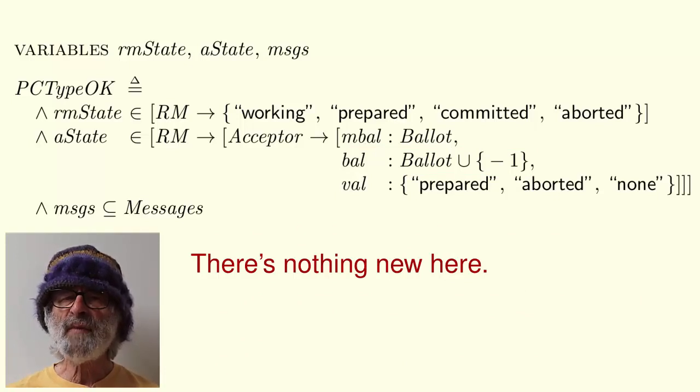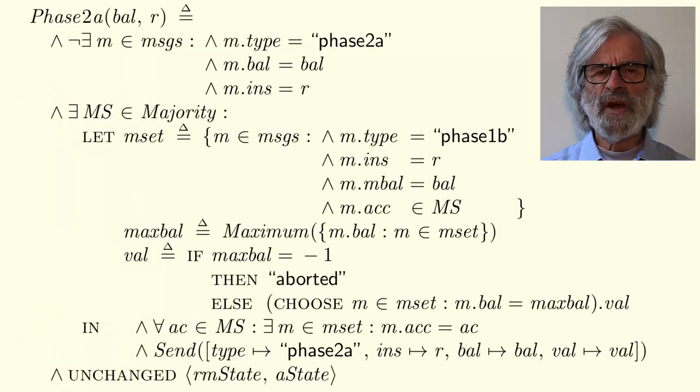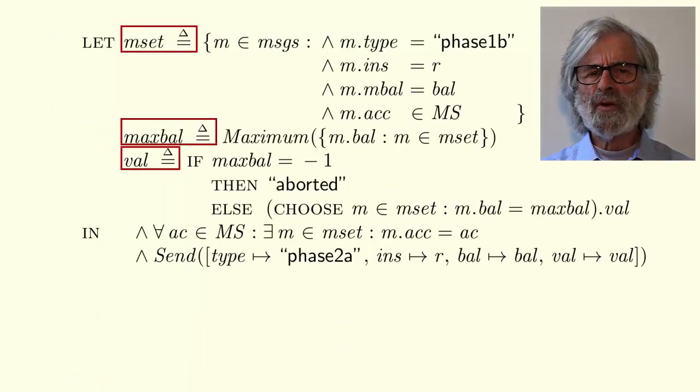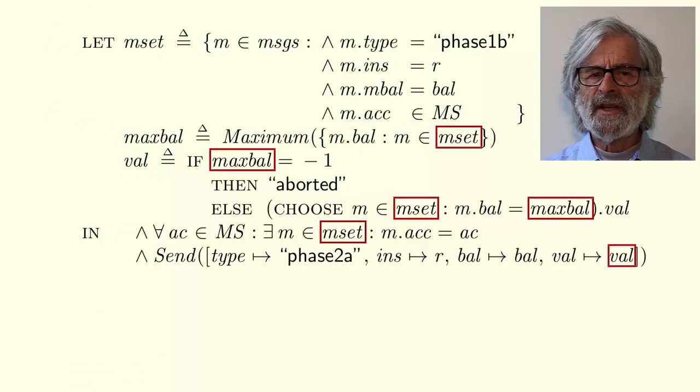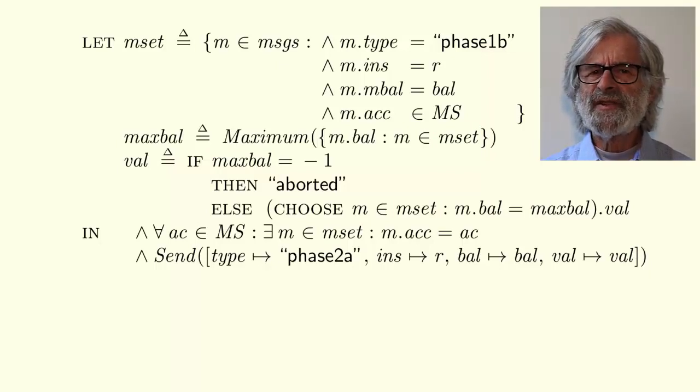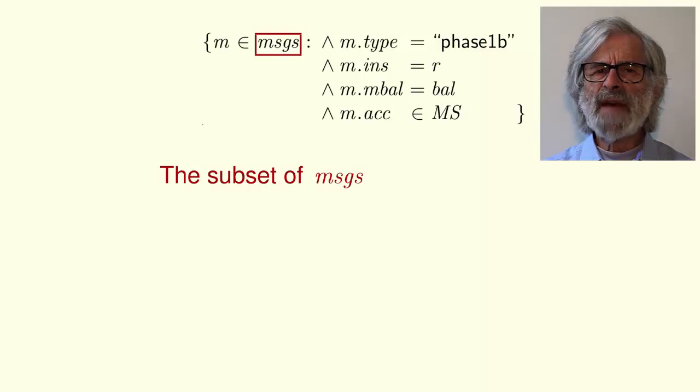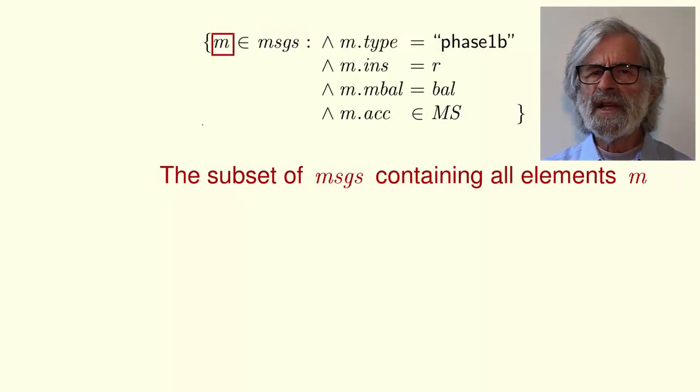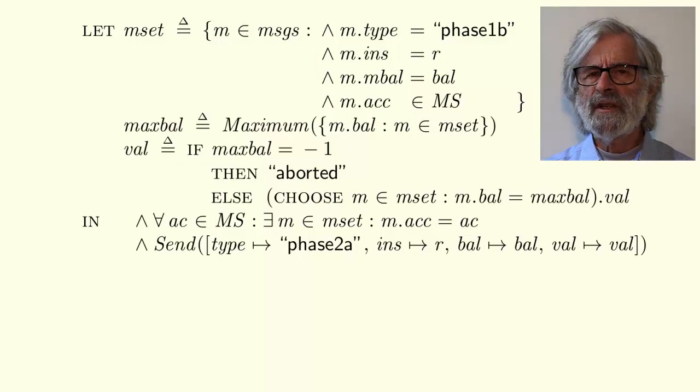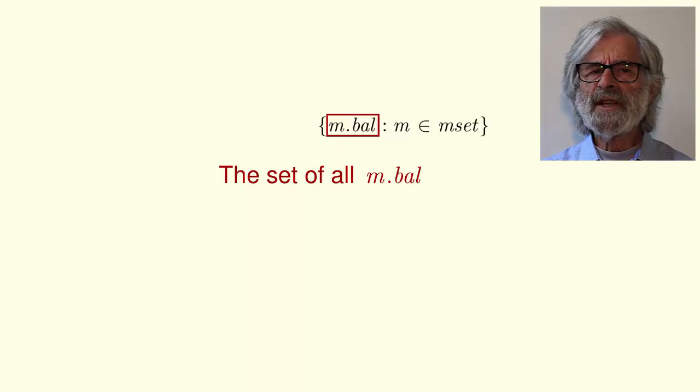That's true for what follows in the module up until this definition of phase 2a, which introduces several new features of TLA+. The first is this let in expression. The let clause makes three definitions local to the let in expression. The defined identifiers can be used only in the expression. The next TLA+ notation introduced here is this set expression. It equals the subset of msgs consisting of all its elements m satisfying this formula. The let in expression also introduces another set notation. This expression equals the set of all elements of the form m dot bal for all m in the set m set.